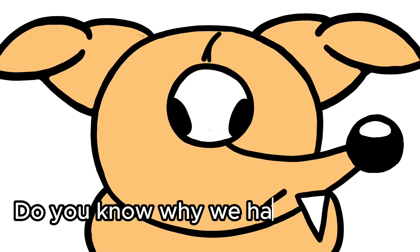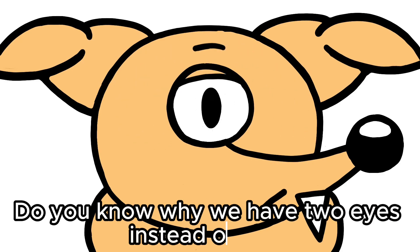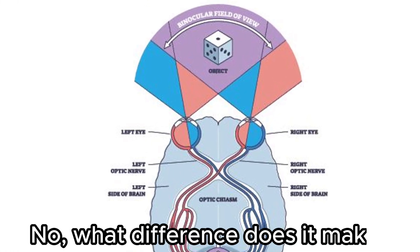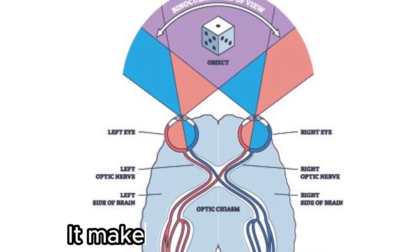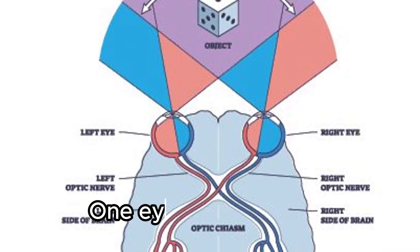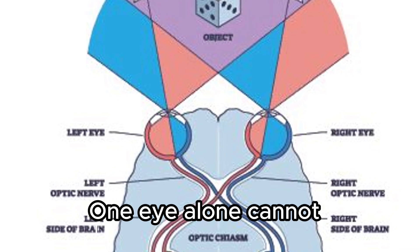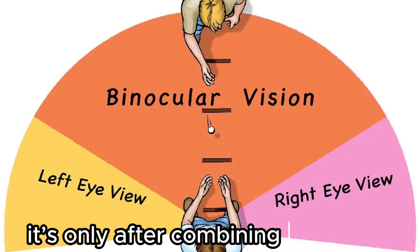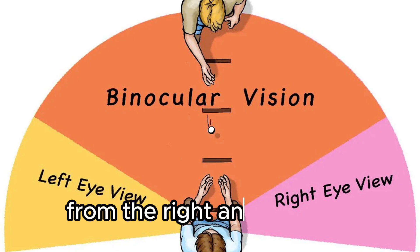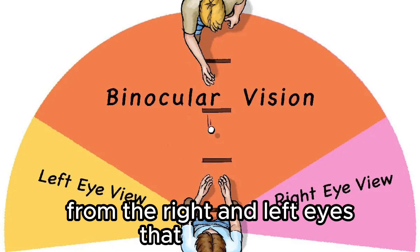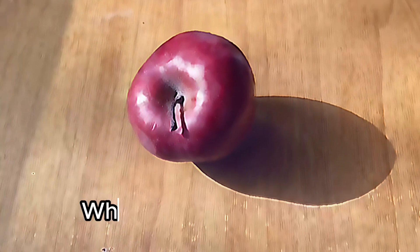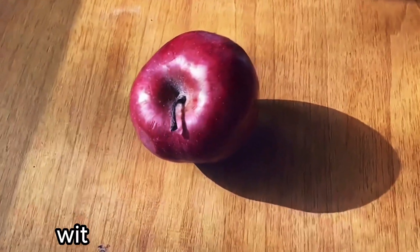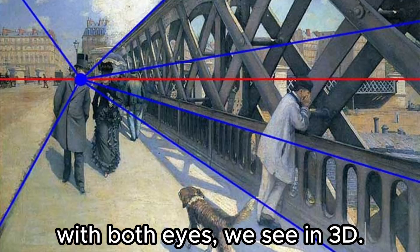Do you know why we have two eyes instead of one? Now what difference does it make? It makes a huge difference. One eye alone cannot perceive perspective. It's only after combining the views from the right and left eyes that we see it. When we close one eye, we see in 2D. With both eyes, we see in 3D.